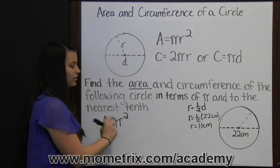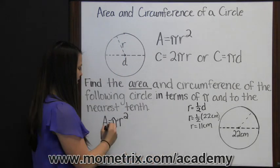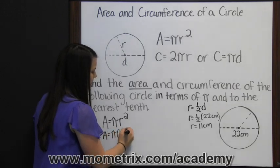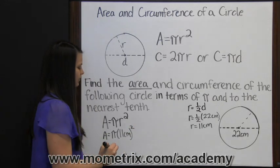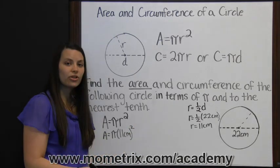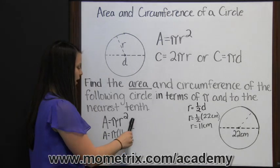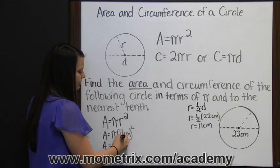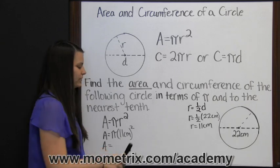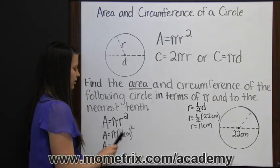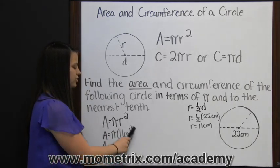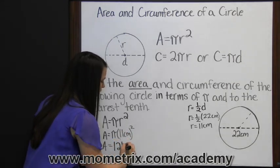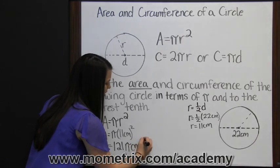Now we'll substitute 11 centimeters for our radius. So our area is pi times 11 centimeters squared. We need to follow PEMDAS, so we need to square our radius first. 11 squared is 121 centimeters squared. 121 centimeters squared times pi is 121 pi centimeters squared.